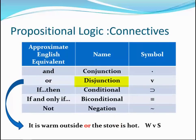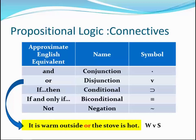The connective called disjunction is symbolized by the wedge, which looks like the letter V. Each statement of the disjunction is called a disjunct, and each disjunct has a truth value, as does the entire disjunction. So 'It is warm outside' can be true or false, 'The stove is hot' can be true or false, and the compound statement 'It is warm outside or the stove is hot' also has a truth value. Disjunctions are true if either or both of its component statements are true, and only false if both statements are false.